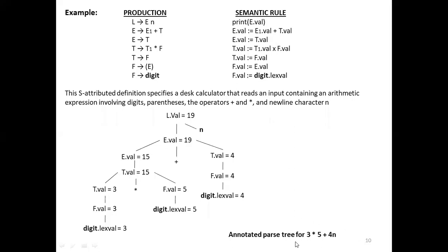If I don't want to directly annotate, I will make a parse tree first. The tree is built in front of you, and then we annotate it — adding attribute values to the nodes. The final result is called an Annotated Parse Tree, where the values are also visible at each node.